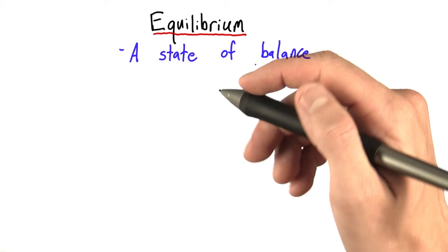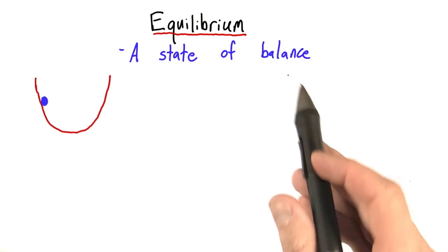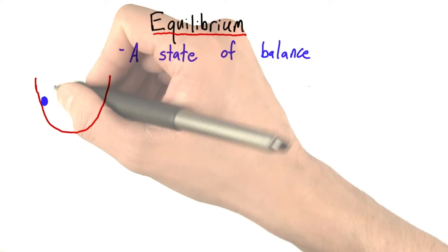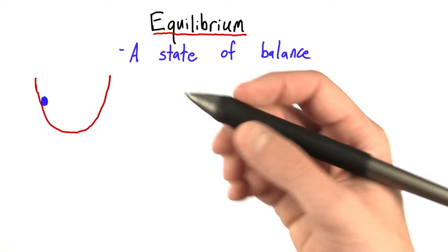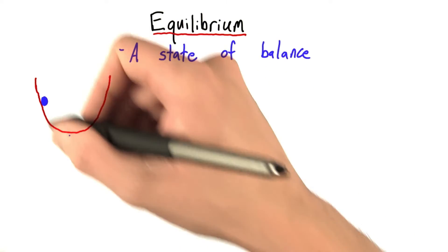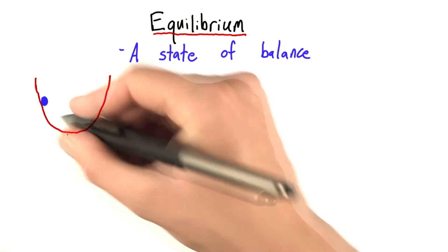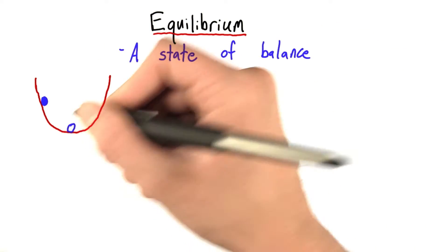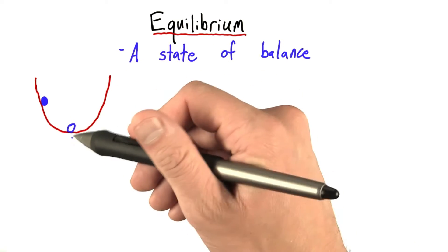Before we get too deep into a definition, let's talk about some examples. For example, let's consider a ball in a well. If I release this ball from right here, we all know what's going to happen. It's going to roll back and forth, and eventually it's going to settle in one spot. The place where it settles, somewhere near here, is its equilibrium.